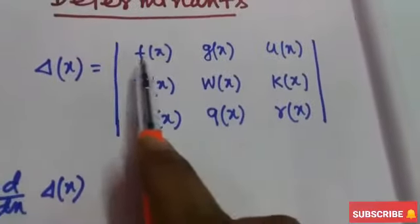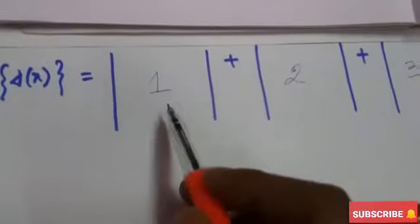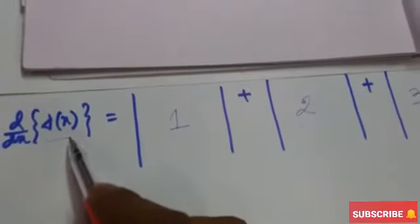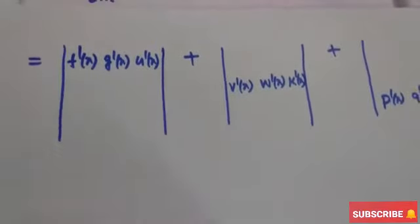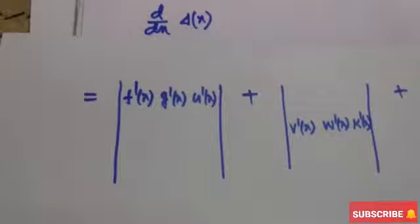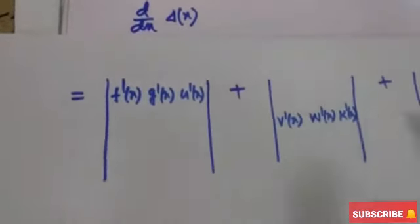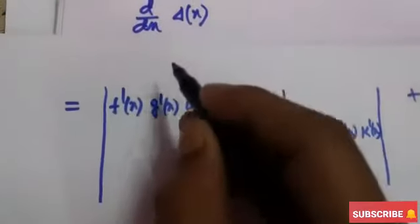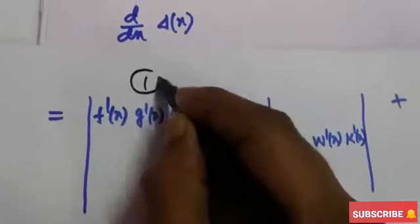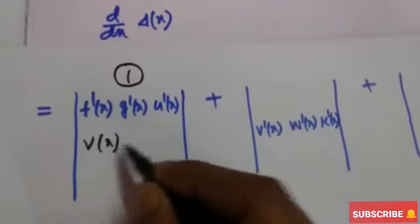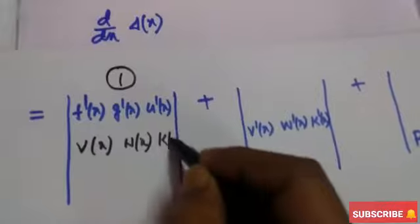If it is a determinant of order 2, then we draw only 2 determinants to find out the derivative of del(x). For the first determinant, the first row is differentiated: f'(x), g'(x), u'(x). The rest — v(x), w(x), k(x), p(x), q(x), and r(x) — will be unchanged.